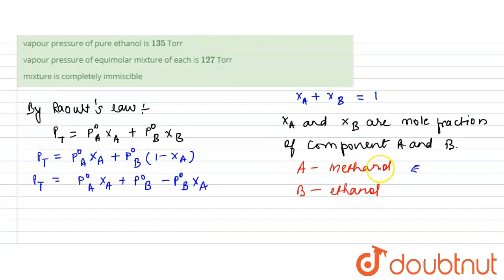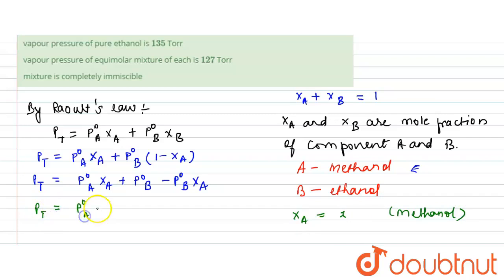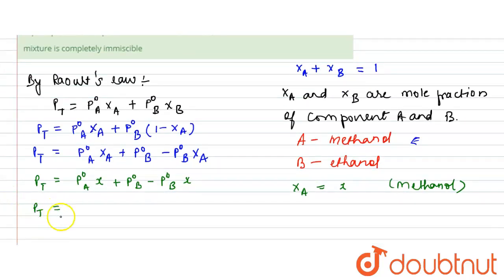Since x_A is the mole fraction of methanol, and the question denotes it as x, we substitute x for x_A. Taking x common, the total pressure expression becomes: P⁰_B plus x times (P⁰_A minus P⁰_B).